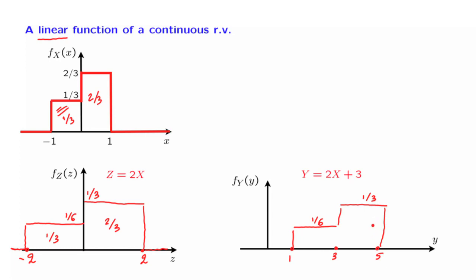The story is entirely similar to what happened in the discrete case. We start with a PDF of x, stretch it horizontally by a factor of 2, and then shift it horizontally by 3. The only difference is that in the continuous case, we also need to scale the plot in the vertical dimension — specifically, make it smaller by a factor of 2 — in order to keep the total area under the PDF equal to 1.